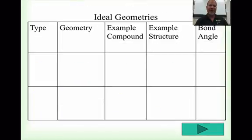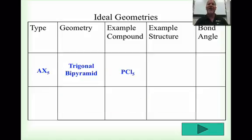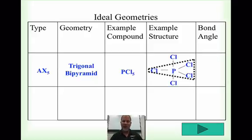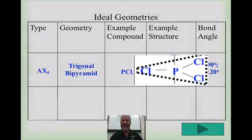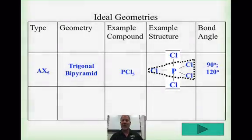We have two more ideal geometry examples involving expanded octets. The first is AX5, called trigonal bipyramidal, with the example PCl5. Phosphorus has 5 valence electrons, and chlorine's very high electronegativity causes that lone pair to separate out and form five bonds, giving 10 electrons around the central atom. Within the triangular plane the bond angles are 120 degrees — just like trigonal planar. The two axial chlorines are opposite each other, running 90 degrees in relationship to the equatorial plane, so we have two bond angles to deal with.